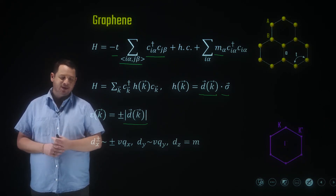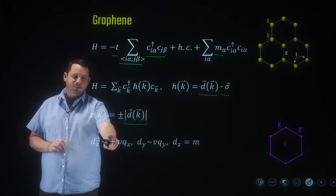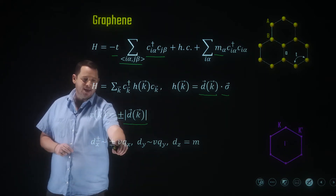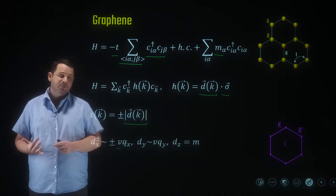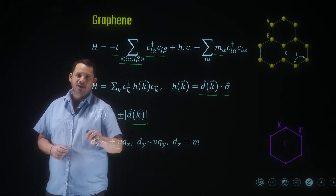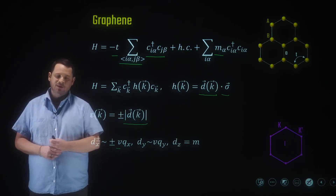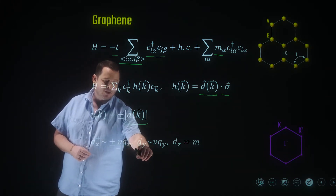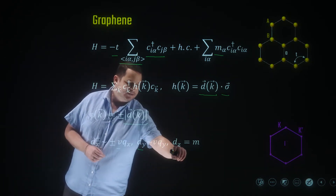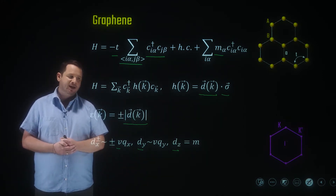What are the components of this D-vector? First, we have the DX component, which is valley-dependent — it has a positive sign on the K valley and a negative sign on the K' valley. We have the velocity here, which is directly proportional to the hopping amplitude times the lattice constant, and a linear term in the momentum expansion away from the K and K' points in the Brillouin zone. Similarly, the DY term has just the velocity times QY, and the DZ term has the on-site mass that we may consider in a moment.